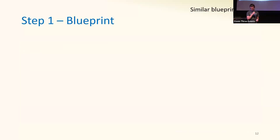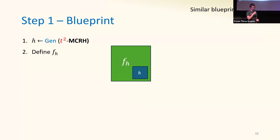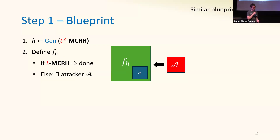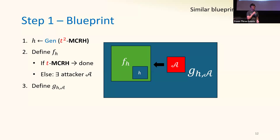We'll start with just the high-level viewpoint. We're starting with a T-squared MCRH — consider some function H sampled from it. We'll use this function to build a family of functions F, in some black-box way we'll specify soon. Now there are two cases: either this F happens to be a T-MCRH, and we're finished; or if not, then we have some attacker against this function family. The most interesting part of the proof is that we use this attacker and the functions F to define another function family G, and we claim that this G must be a T-MCRH. So we're using the attacker in the construction — this is non-black-box.